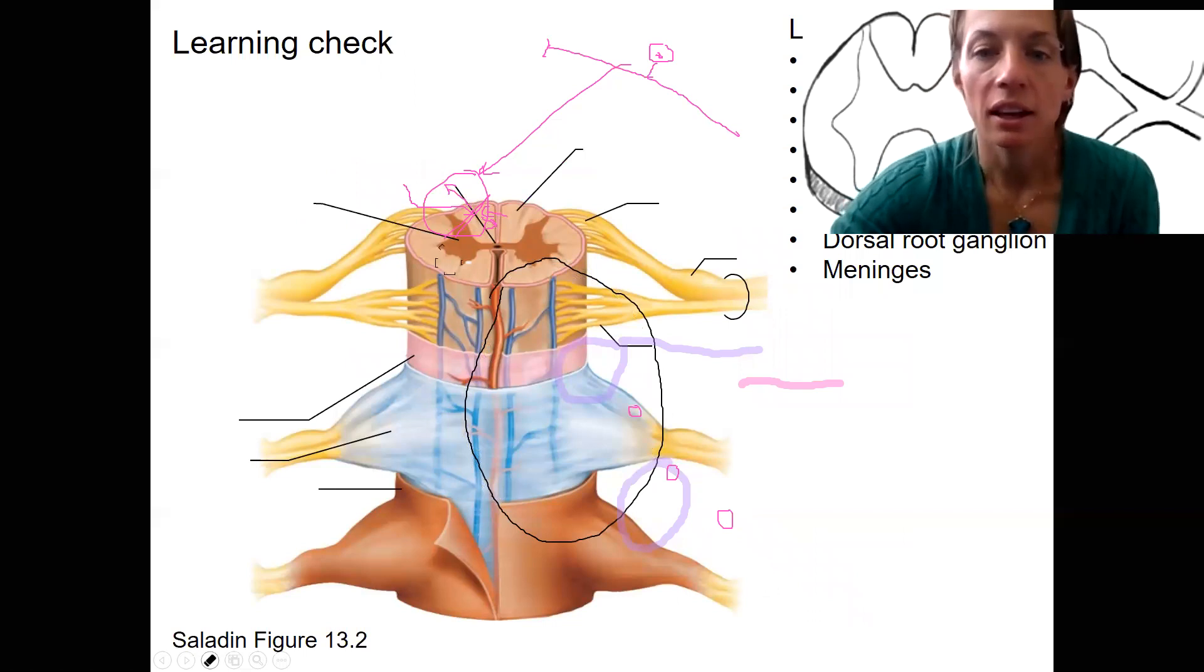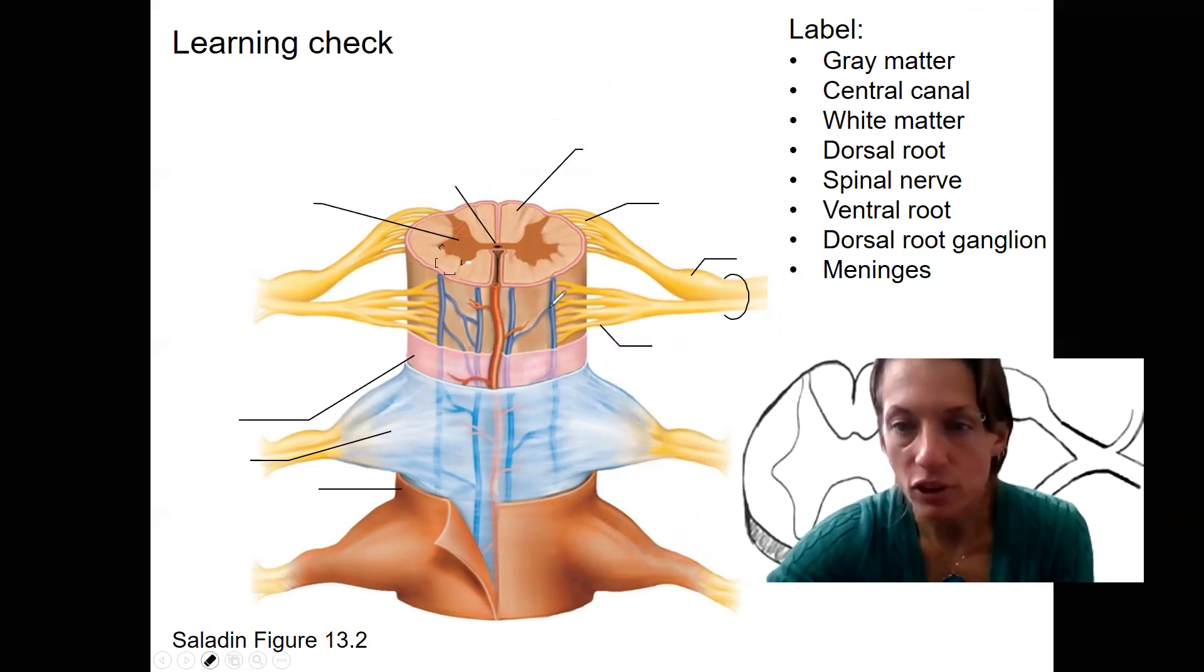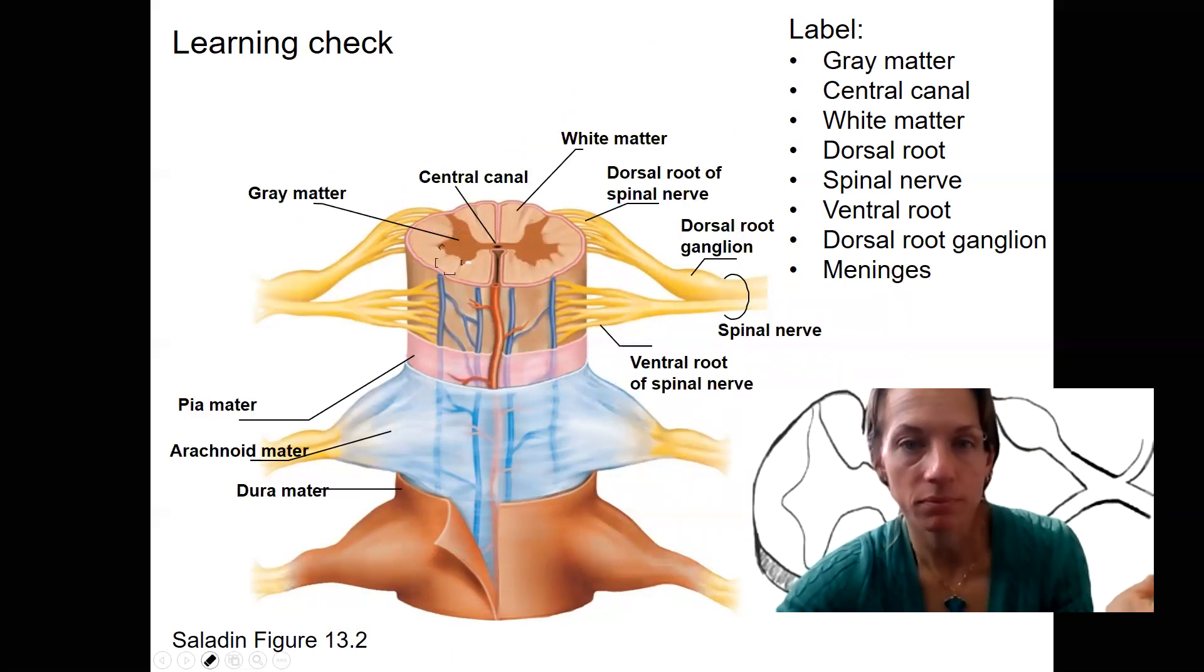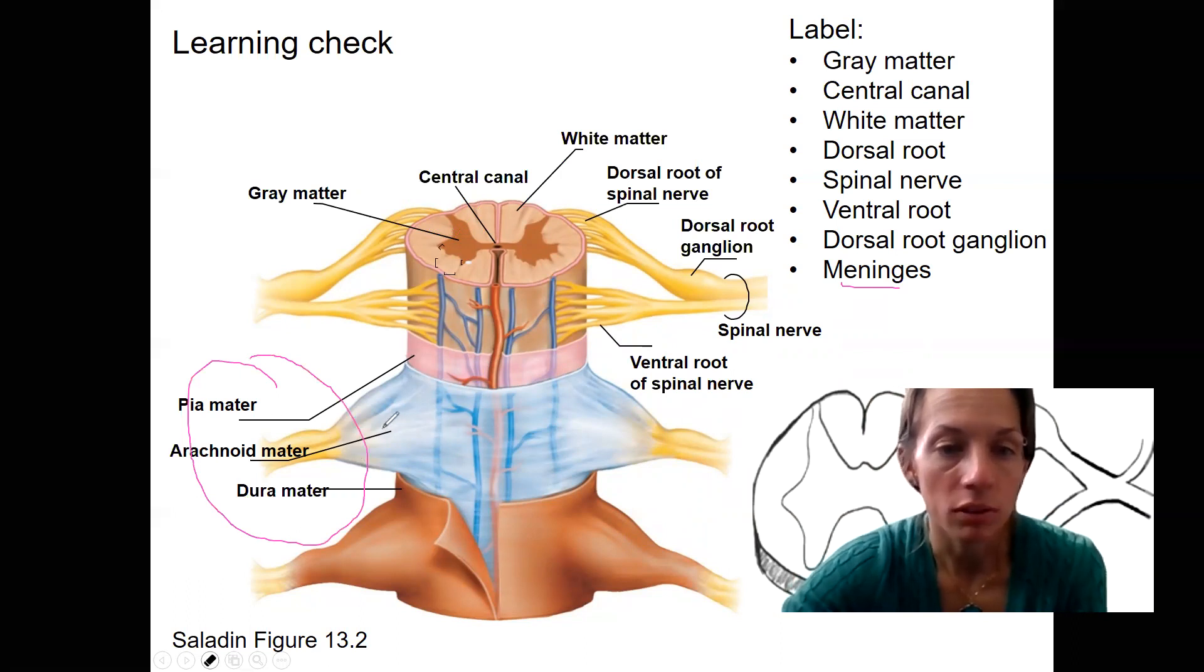So here is a learning check. I'd like you to be able to label everything listed here. So you could print this for yourself, do it by eye right now. I'll bring this up now so you have the answers. So you've got the three different meninges over here: dura, arachnoid, pia mater.